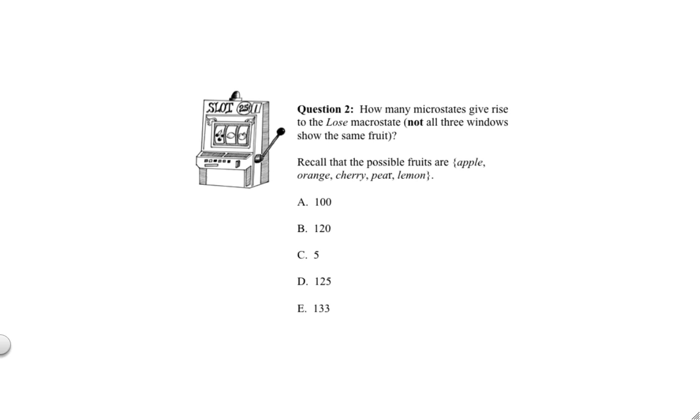So, our first question is, how many possible microstates are there total? To calculate that, we notice that for the first window, there's a total of five possible fruits that this could be.